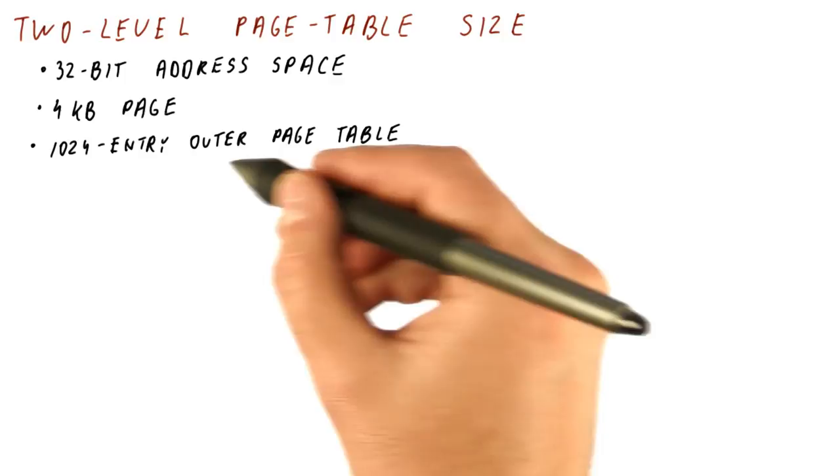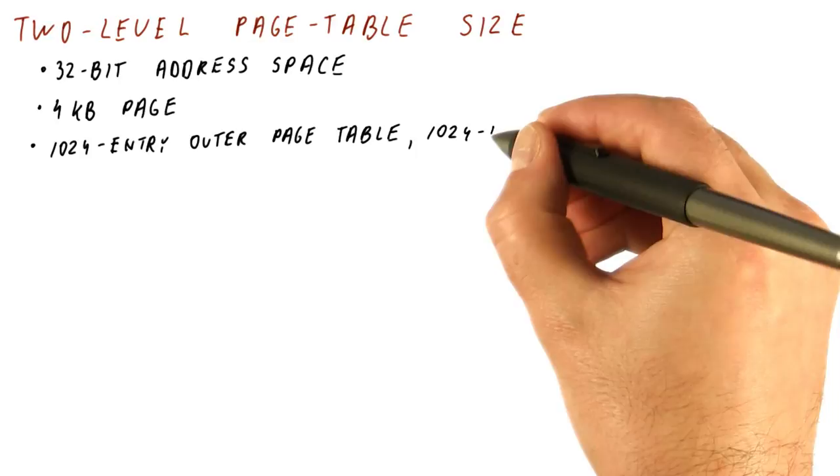Let's say we're using a 1024 entry outer page table and 1024 entry inner tables. There can be many of them, up to 1024 of them. And let's say that a page table entry is 8 bytes.